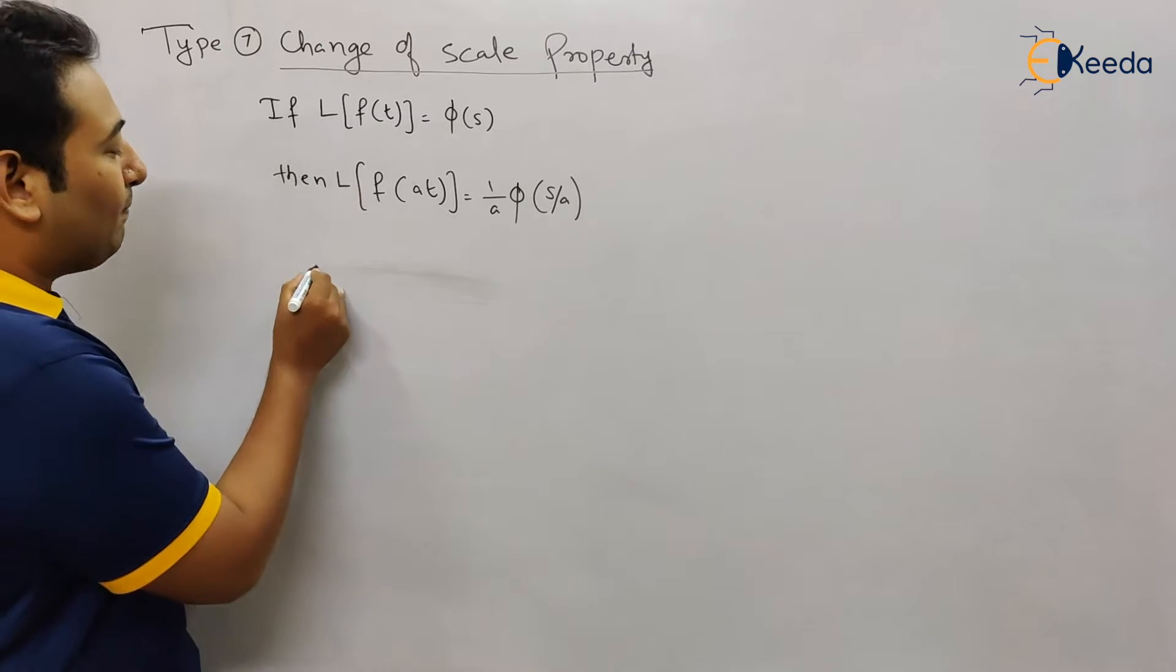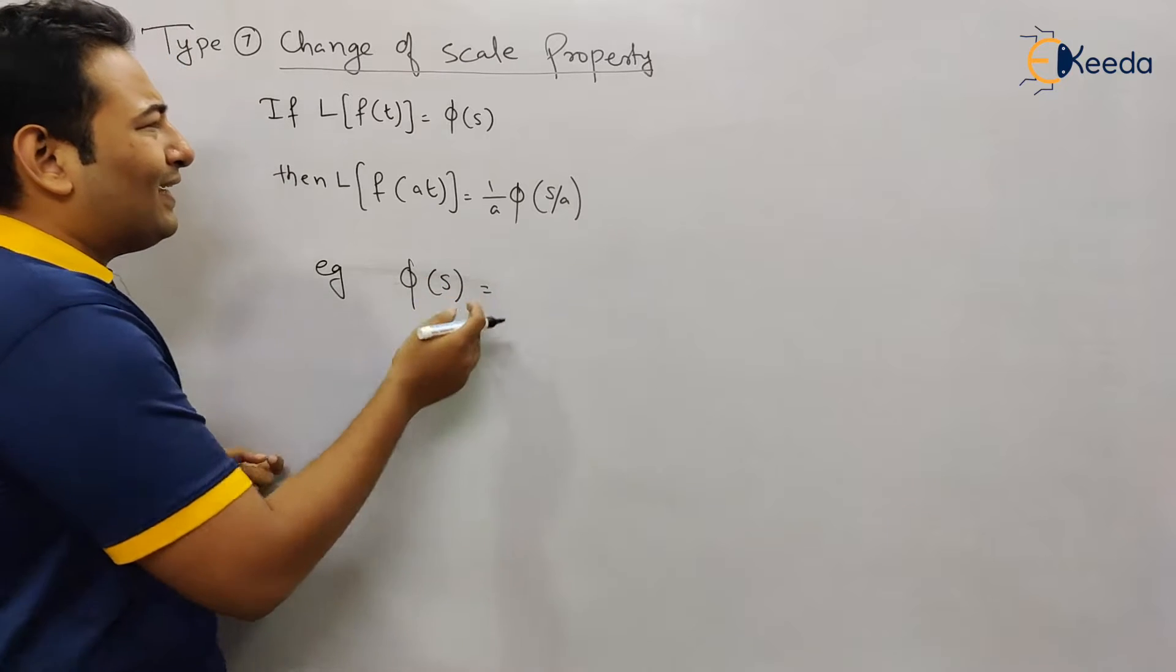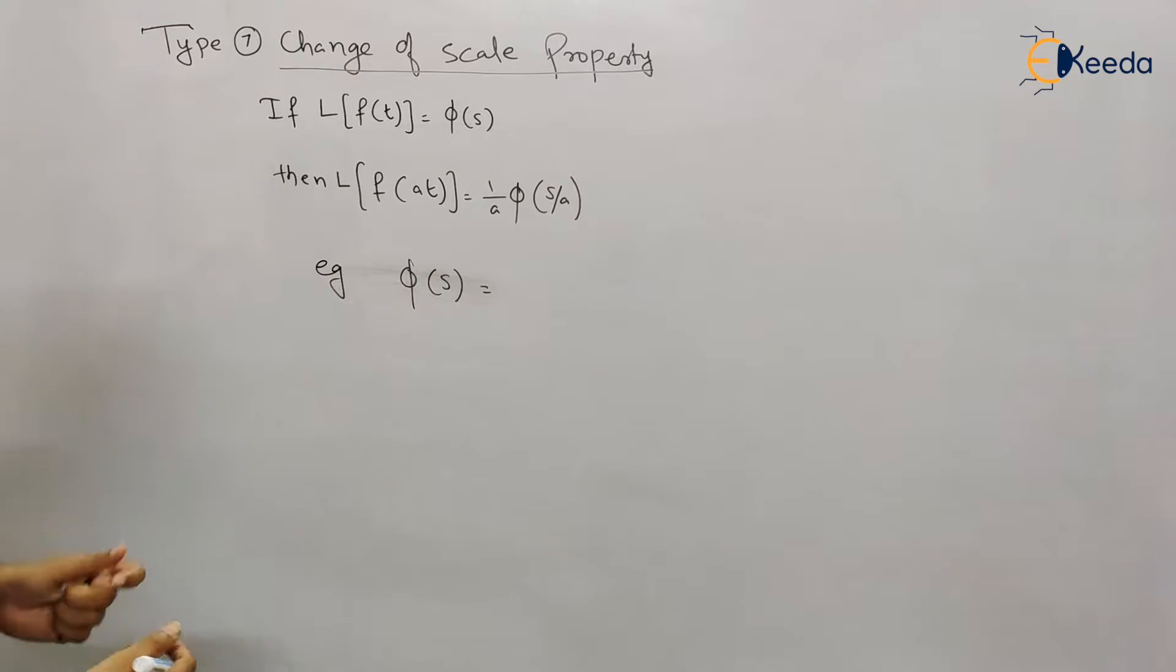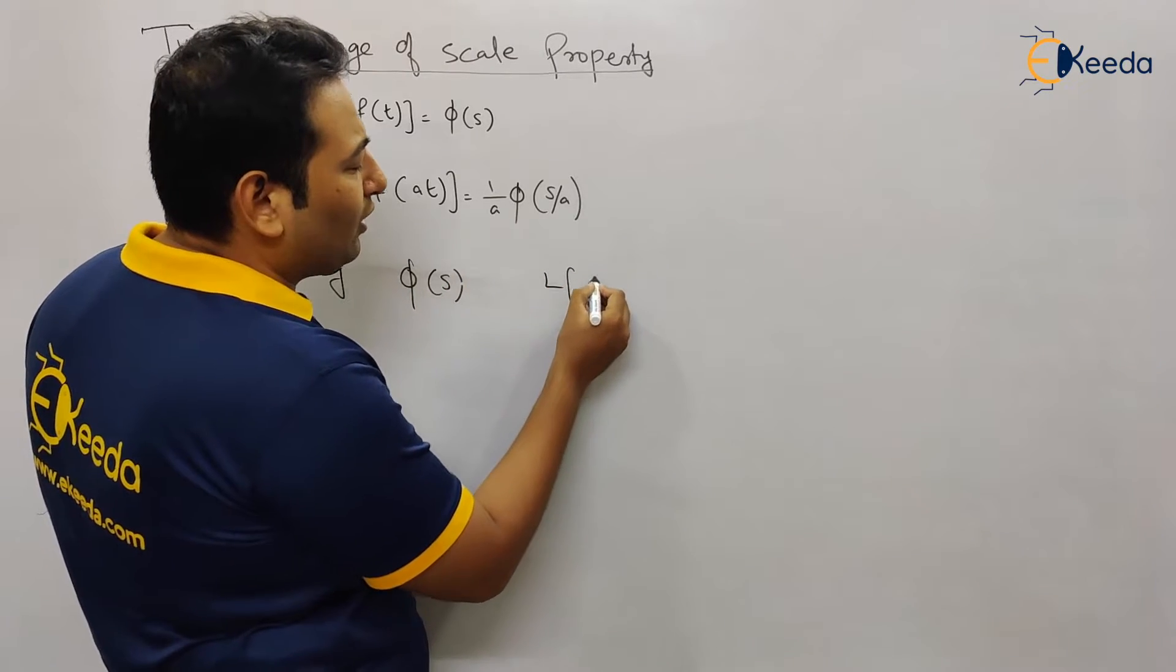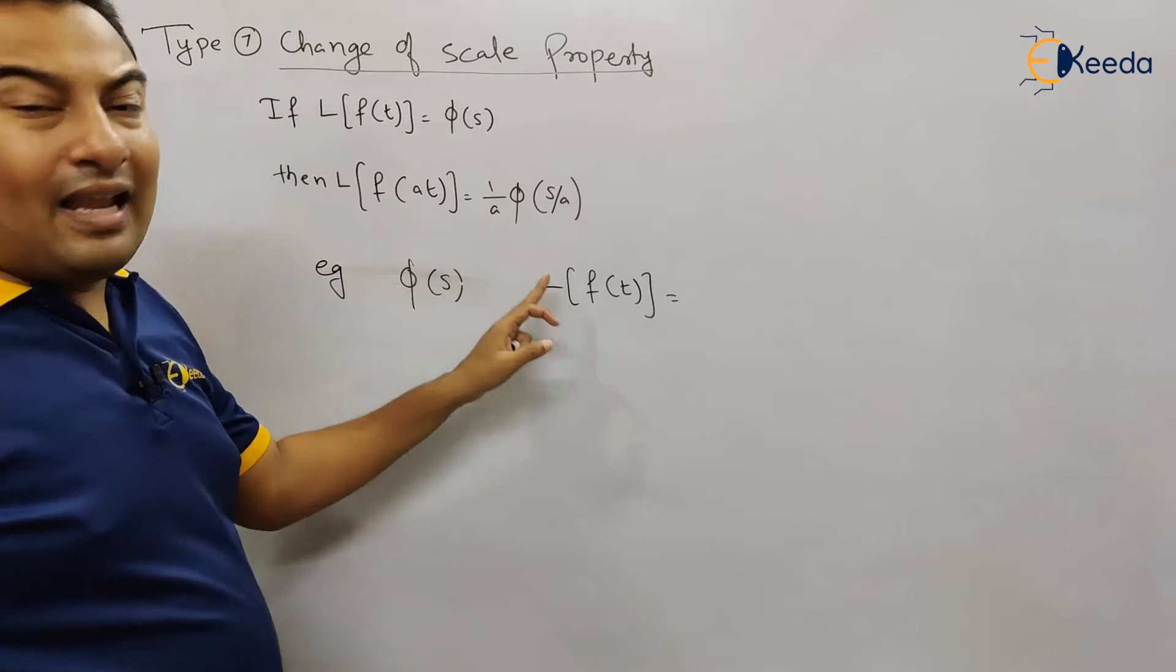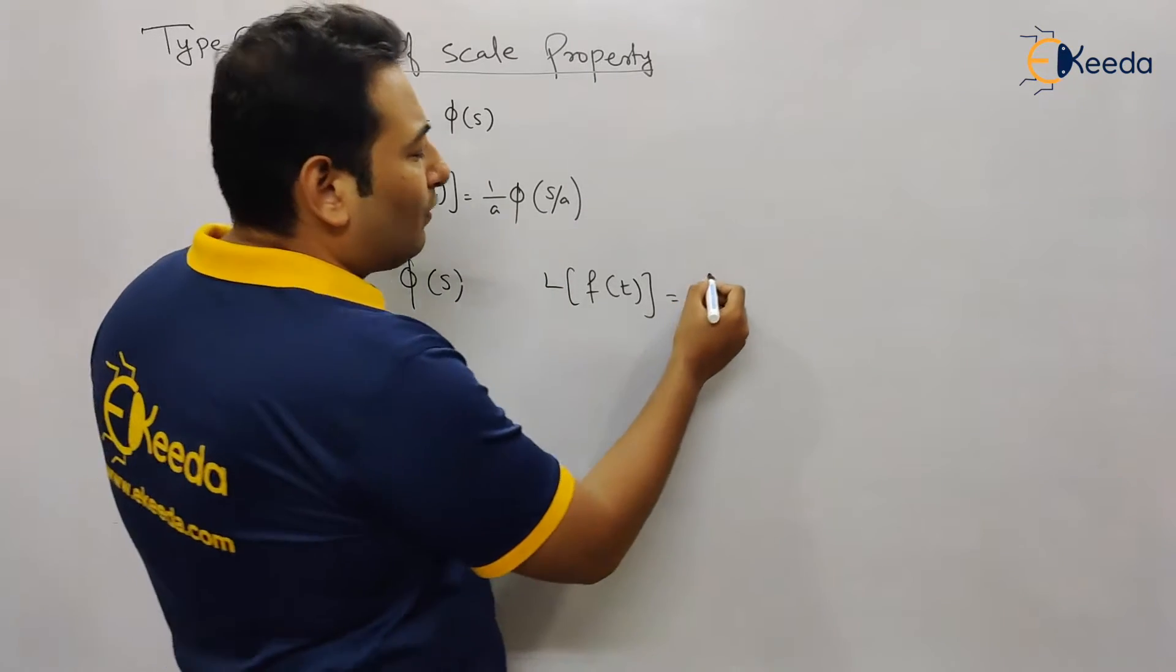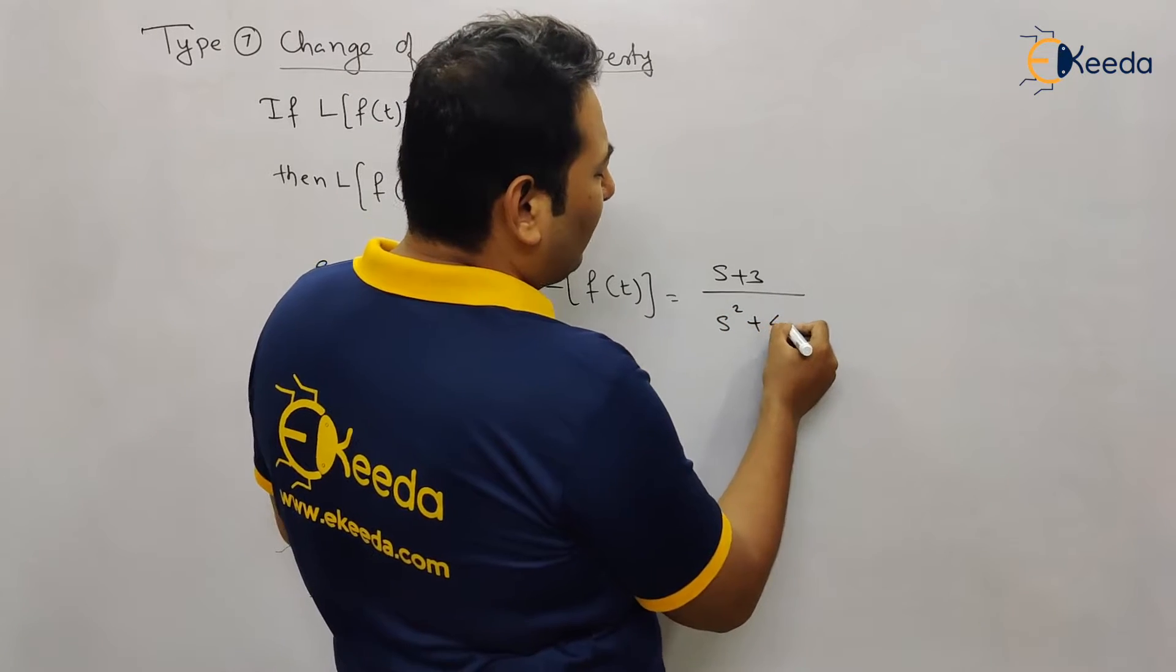For example, suppose φ(s) means Laplace of f(t). Let's write it as Laplace of f(t) so there will be no confusion. If it is Laplace of f(t), it has to be in terms of s. I am just writing down a random expression.